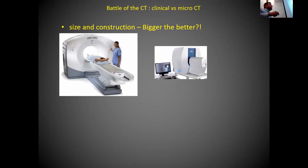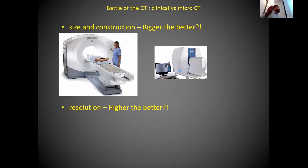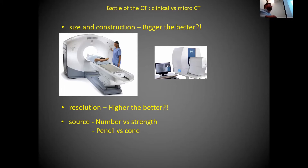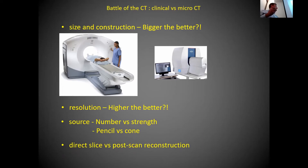Some differences between clinical and micro-CT: in terms of size, most micro-CT scanners are benchtop models — you can have them in your lab without needing a separate room or dedicated technicians, but they are smaller and limited by sample size. Micro-CT has higher resolution but at the cost of higher radiation. Modern clinical CT scanners are multi-slice with multiple detector rows, while micro-CT has a single cone-beam source with one detector. Clinical CT uses a pencil-shaped source.